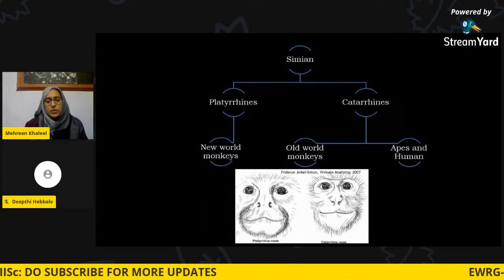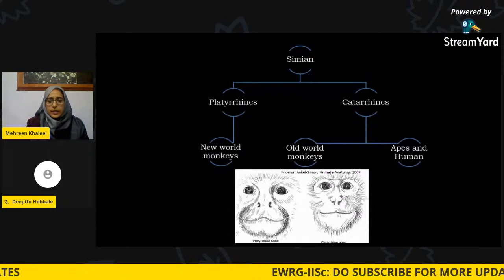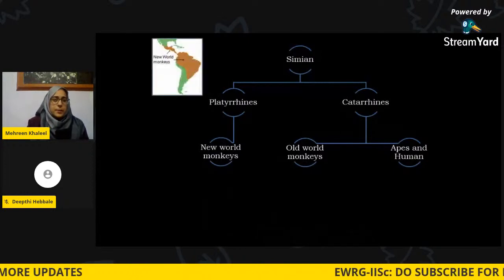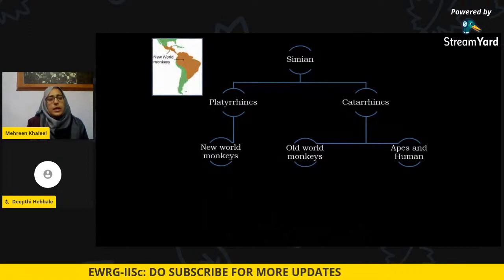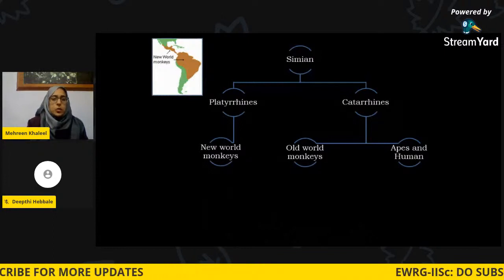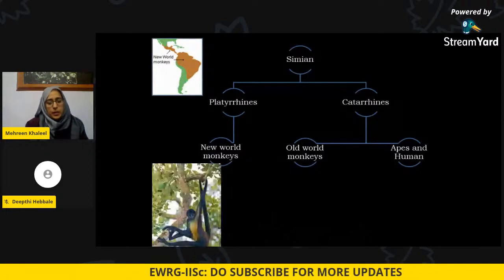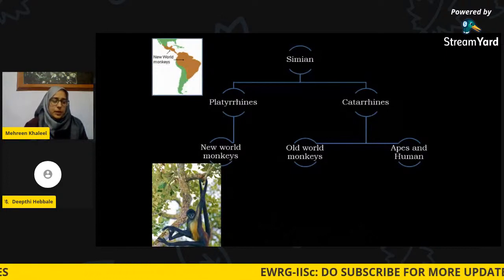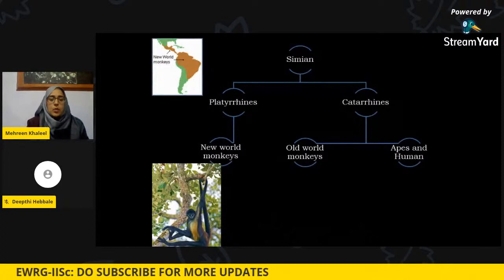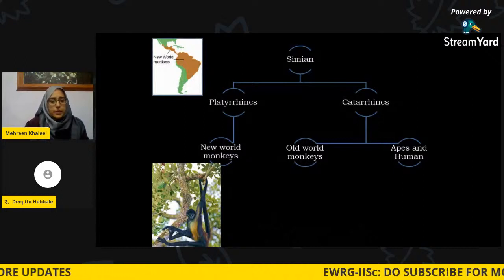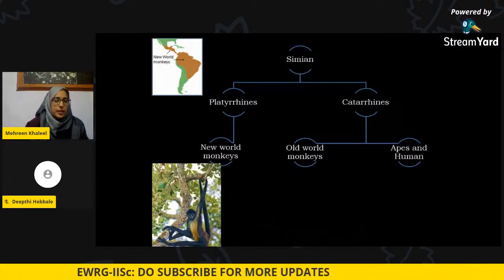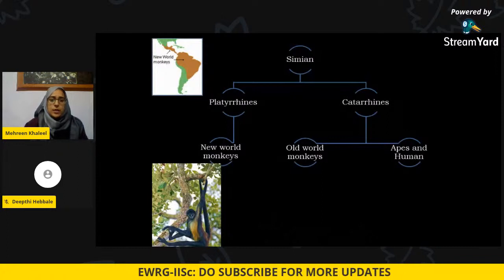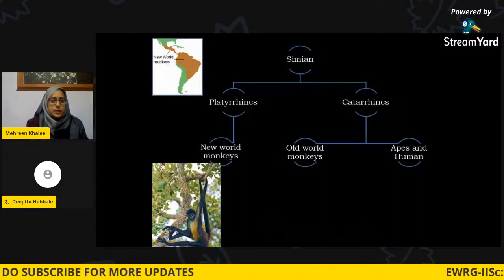Monkeys found in the New World — South America, Central America, and Mexico — are called New World monkeys. For example, the spider monkey. What is different about spider monkeys is that they have a prehensile tail, which is absent in Old World monkeys. The prehensile tail functions as an extension of their body — they can hang using this tail, feed, drink water, and things like that — which is entirely absent in Old World monkeys.